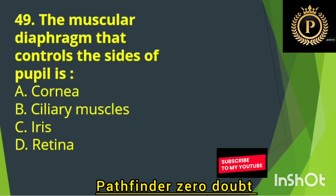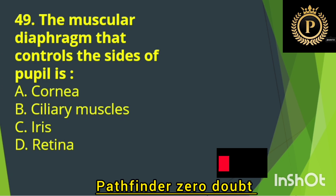The muscular diaphragm that controls the size of the pupil is — Option C: Iris.